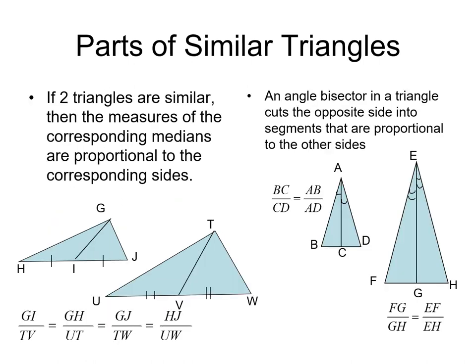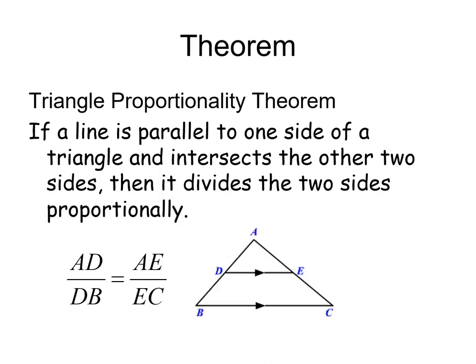Here, if two triangles are similar, then the measure of corresponding medians are proportional to the corresponding sides. Also, an angle bisector in a triangle cuts the opposite side into segments that are proportional to the other sides.